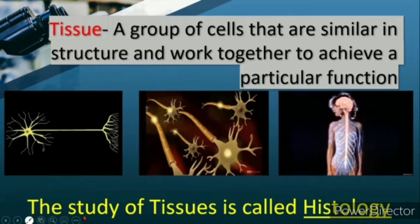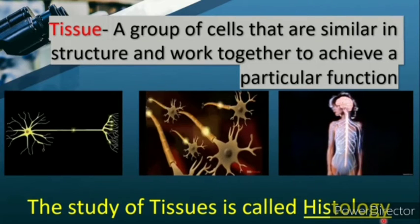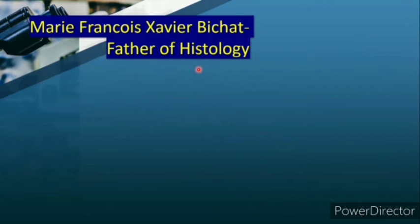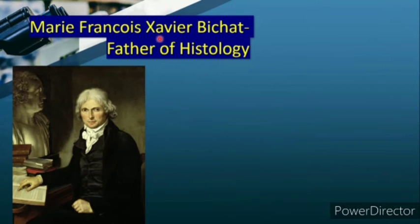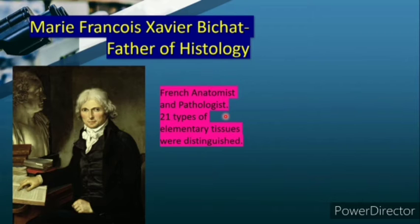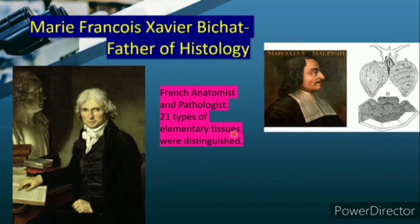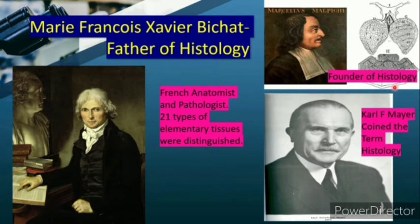The study of tissue is called histology - do not confuse it with history! Now let us see the pioneers behind histology. Marie François Xavier Bichat is known as the father of histology. He was a French anatomist and pathologist. In those days, without sophisticated microscopes, he distinguished 21 types of elementary tissues in humans. Marcello Malpighi is known as the founder of histology, and Carl F. Mayer was the one who coined the term histology.